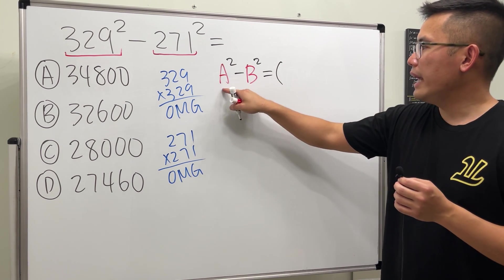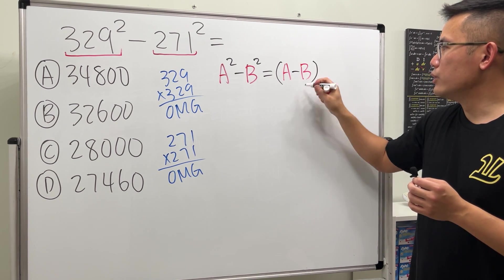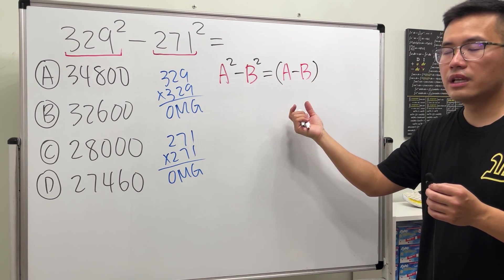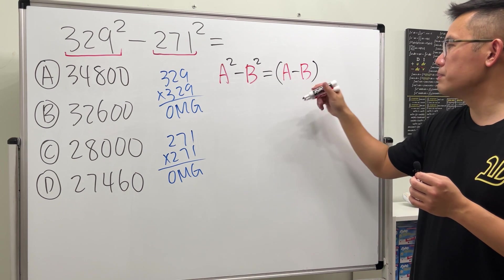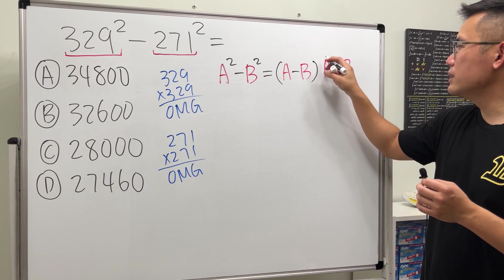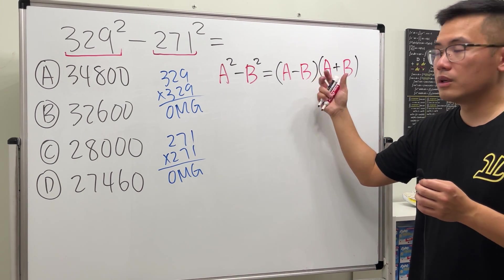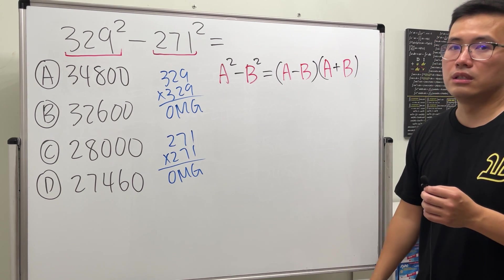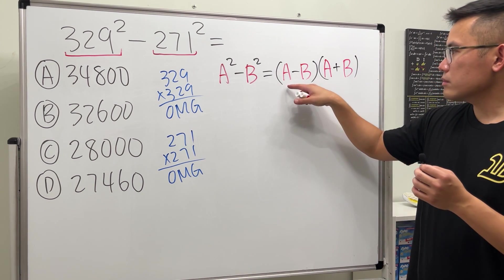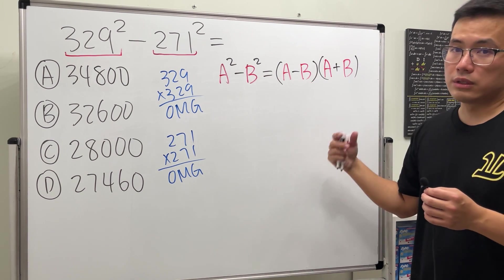But in algebra process, you can actually factor it and you can get a minus b like this - you do this first and put in your parentheses - and then you do a plus b. So you do that and you put that in your parentheses, and then in the middle there's nothing, that means we are multiplying this and that together.